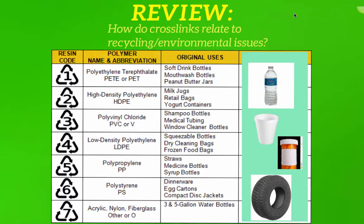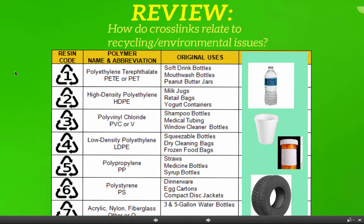I want to quickly review how crosslinks were related to recycling as well as environmental issues. The recycling code tells you the type of plastic that it's made of. So anything with a 1 means it's made of polyethylene terephthalate, and anything with a 5, for example, means it's made of polypropylene. The numbers tell you what type of plastic the item is made of.